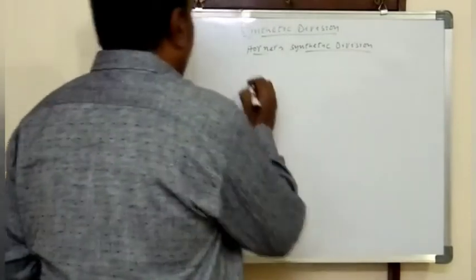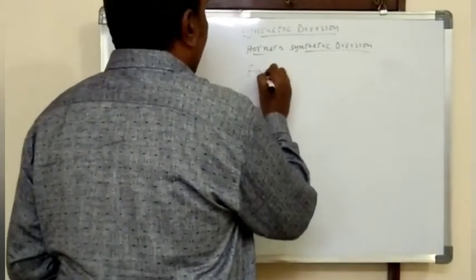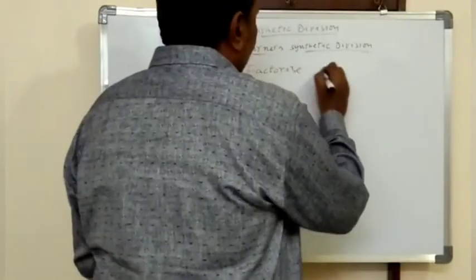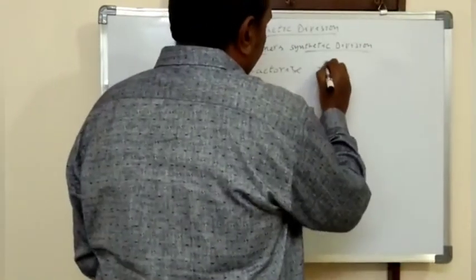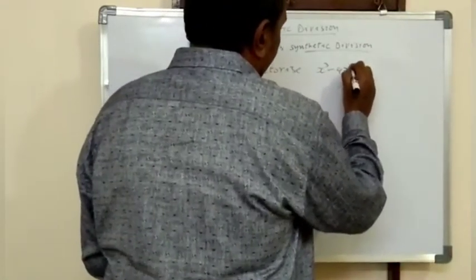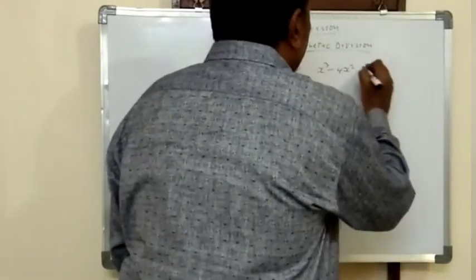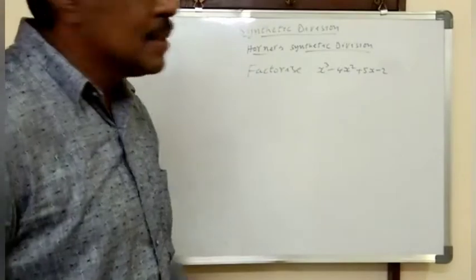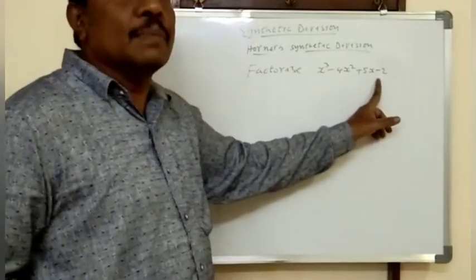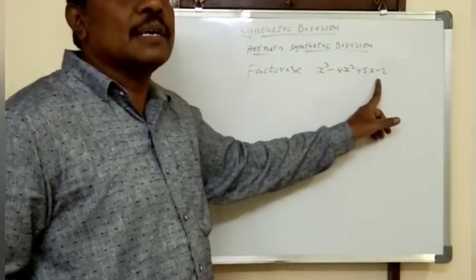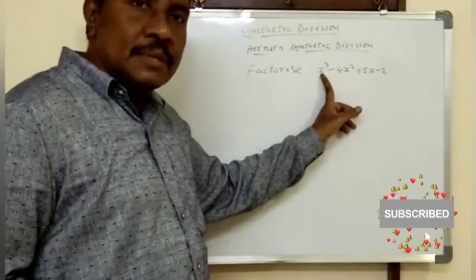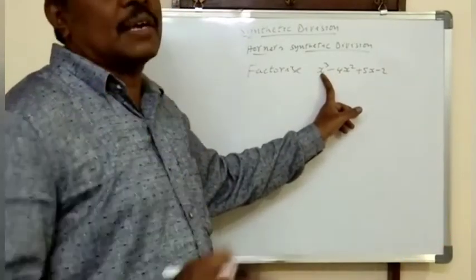Now let us take one example: factorize x cubed minus 4x squared plus 5x minus 2. This is the given polynomial. This polynomial contains at most how many factors? Three factors, because the degree of this polynomial is 3.